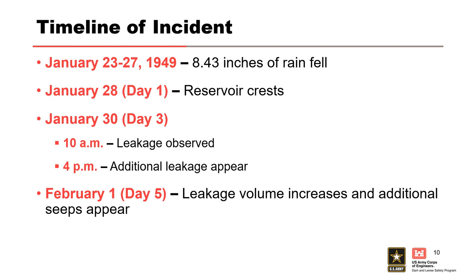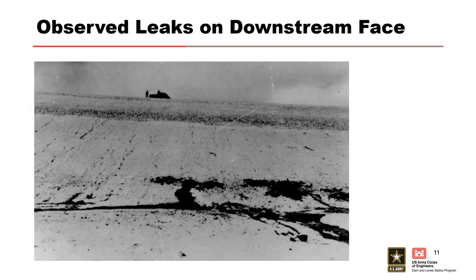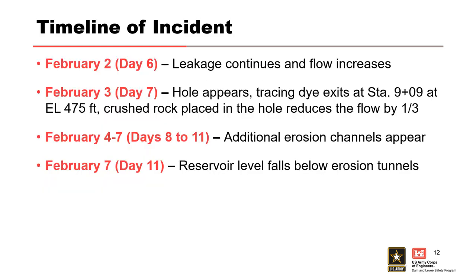Three days later, the leakage volume increased and additional seepage appeared between station 10 and station 14+40. A photograph from 1949 shows one of 30 or more initial leaks that appeared on the downstream face of the dam at the closure section. The leakage appears to be carrying fine-grained material. The silhouettes of two people standing on the crest of the dam next to a car can be seen in the background.